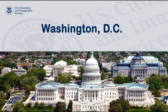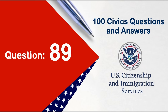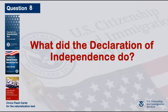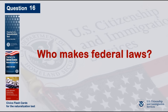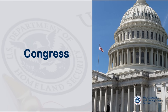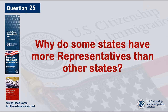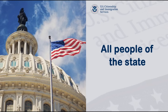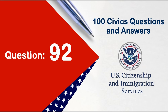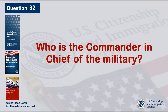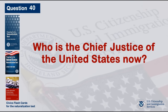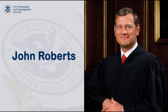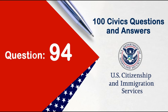What is the capital of the United States? Washington, D.C. What did the Declaration of Independence do? Announced our independence from Great Britain. Who makes federal laws? Congress. Who does a U.S. senator represent? All people of the state. Who is the commander-in-chief of the military? The president. Who is the chief justice of the United States now? John Roberts.